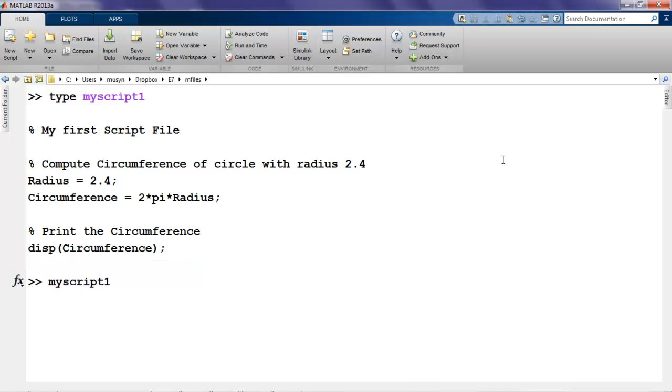We type the name of the script file, and press return, and there the circumference is displayed. Let's make sure that that number is correct. Two times pi times 2.4, and it is.